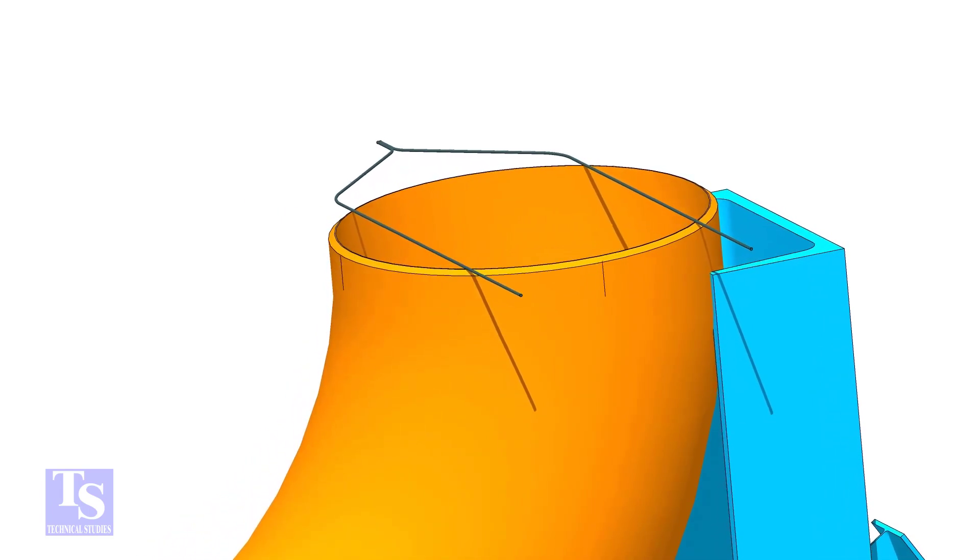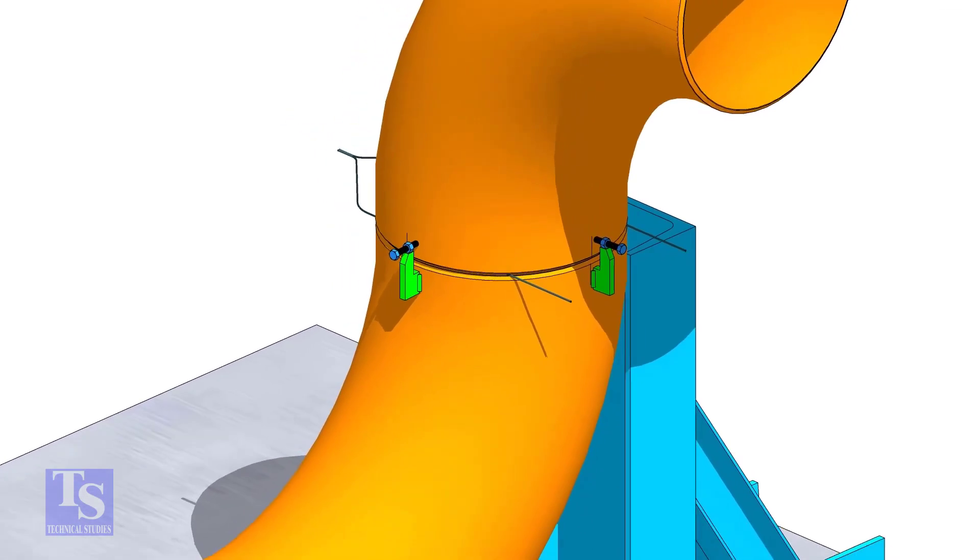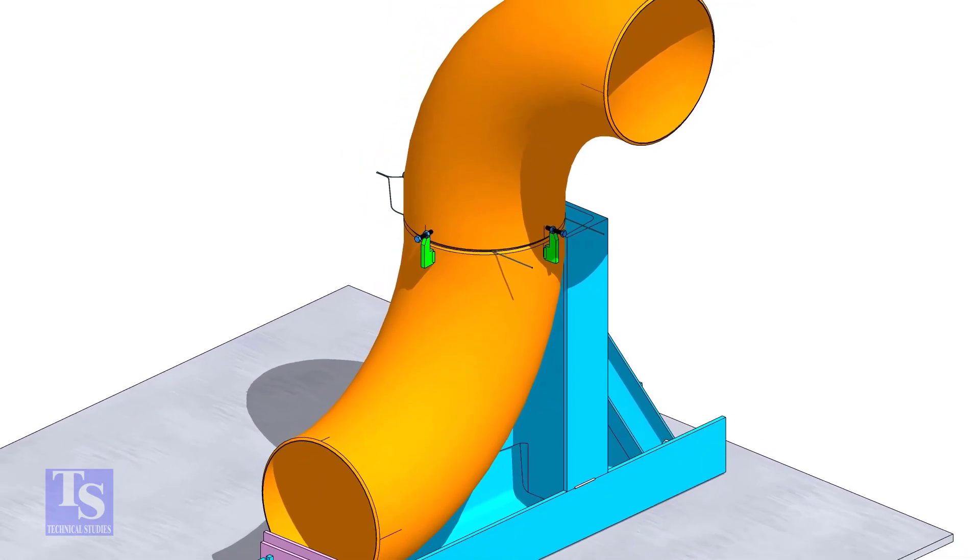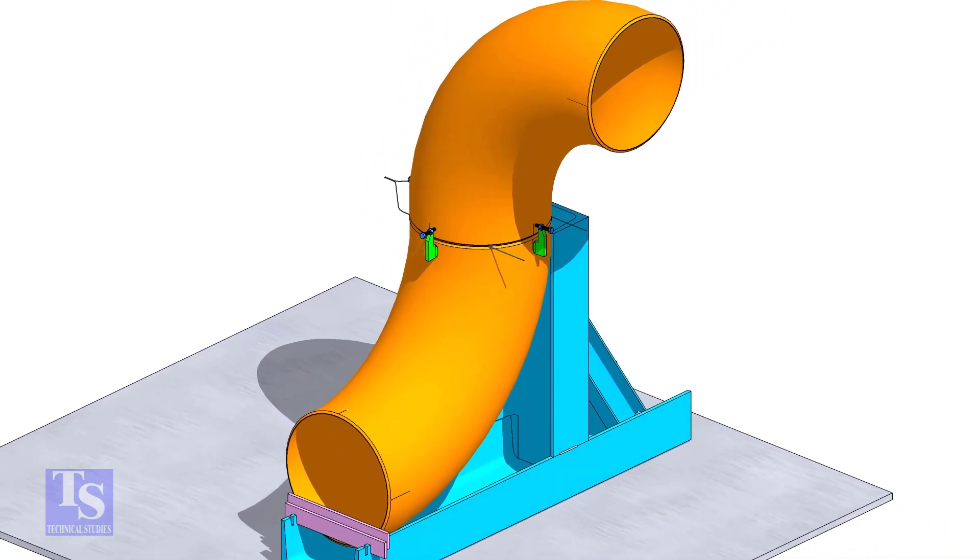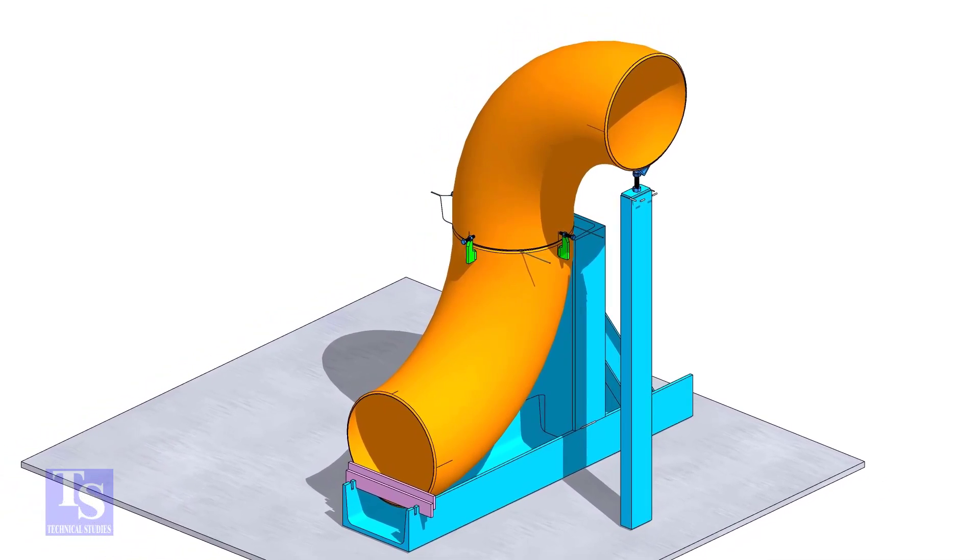Put the gap rod on the top face and tack weld four jack bolts as shown. Put the other elbow and match the center lines in which direction you want to rotate the elbow. Tack weld an adjustable support below this elbow and adjust the height.